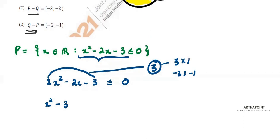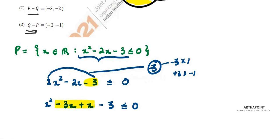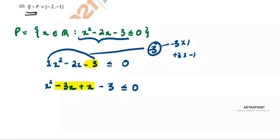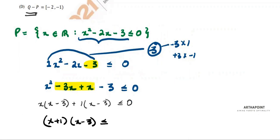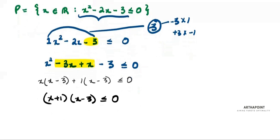We can write this as minus 3x plus x minus 3, which is less than or equal to 0. Since we have minus 3 here, we factor by taking x common: x(x minus 3) plus 1(x minus 3) less than or equal to 0, giving us (x + 1)(x - 3) ≤ 0.